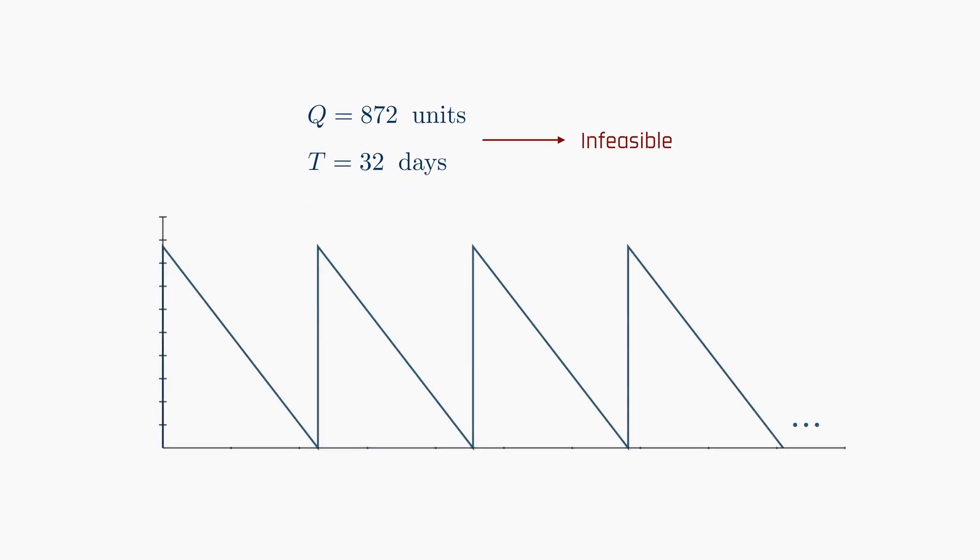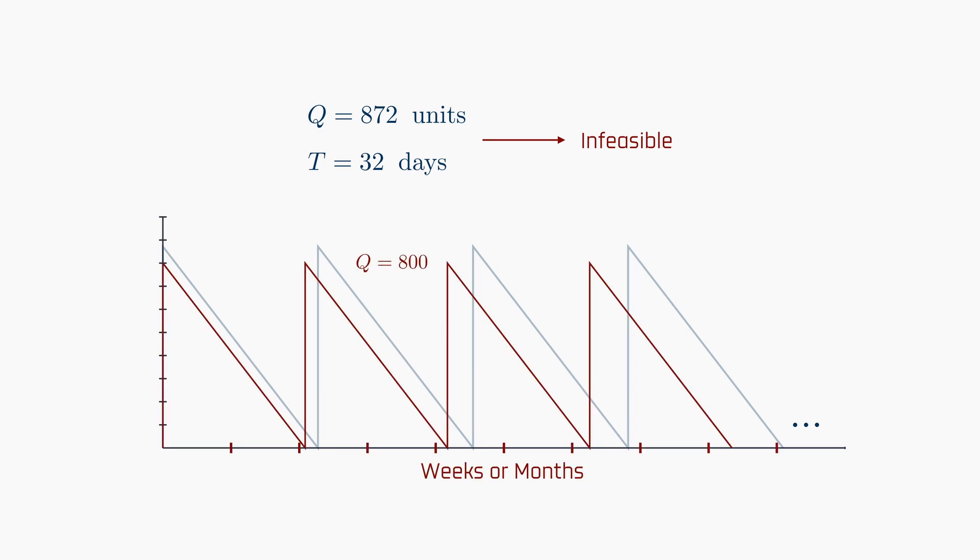Now, what if the resulting policy is infeasible due to internal rules or supplier constraints? How do we navigate situations where orders are restricted to 100 unit increments, or when order frequency is limited to weeks or months? Certainly, we must accommodate our optimal policy to these real constraints.